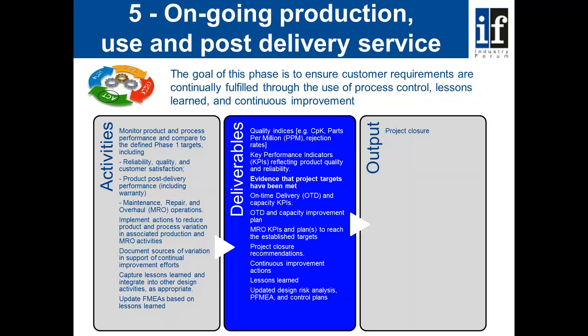APQP does not conclude at PPAP. After the part is approved, APQP carries on and starts looking at ongoing performance — this is the business-as-normal phase. It looks at quality performance such as capability, parts per million, and reject rates. It looks at key performance indicators and evidence that project targets have been met. It also looks at ongoing on-time delivery, capacity, and improvement activities. So this continual improvement activity proceeds well past part approval.